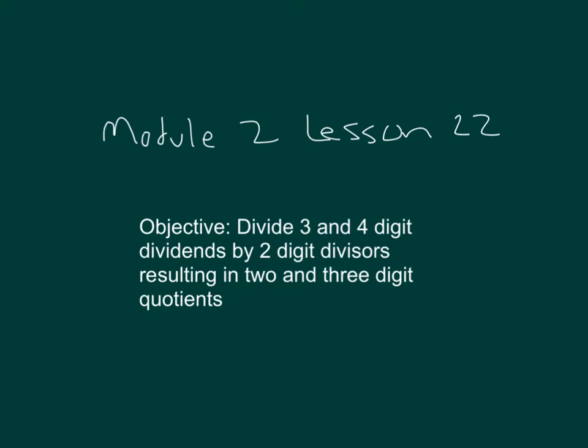The objective is to divide 3- and 4-digit dividends by 2-digit divisors, resulting in 2- and 3-digit quotients.